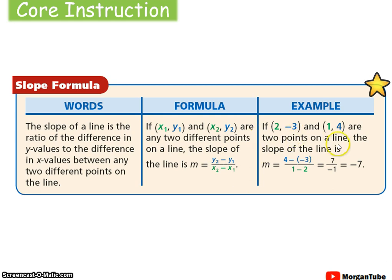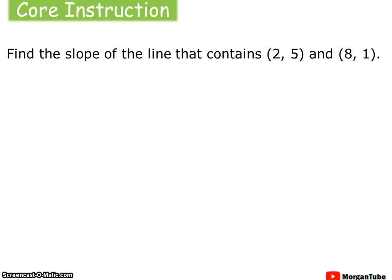So if these two points were examples, we would simply plug in the appropriate points — y-sub-2 minus y-sub-1 in the numerator, and then the difference in our x's in the denominator, x-sub-2 minus x-sub-1. Let's take a look at an example. We're going to find the slope of a line that contains the points (2, 5) and (8, 1).